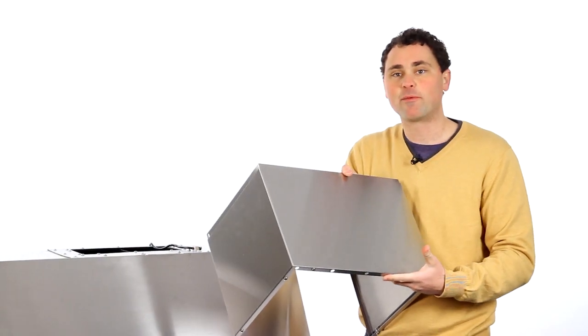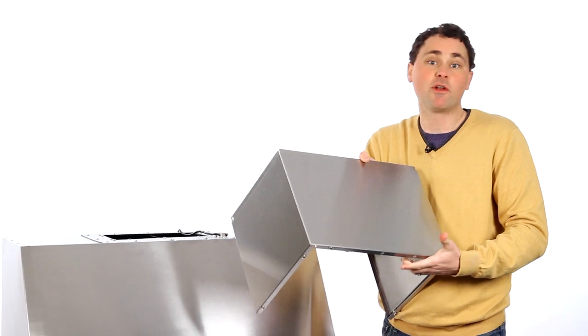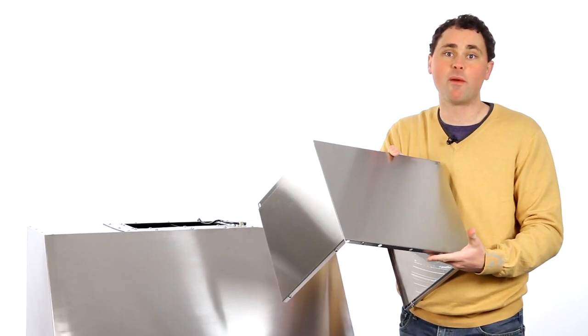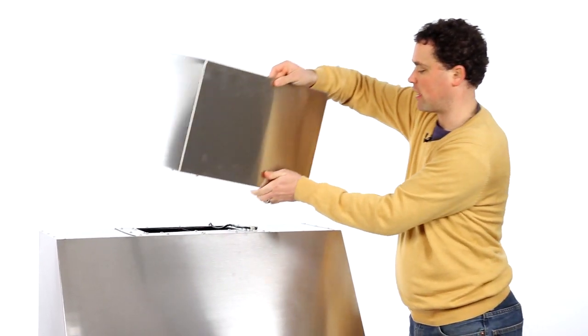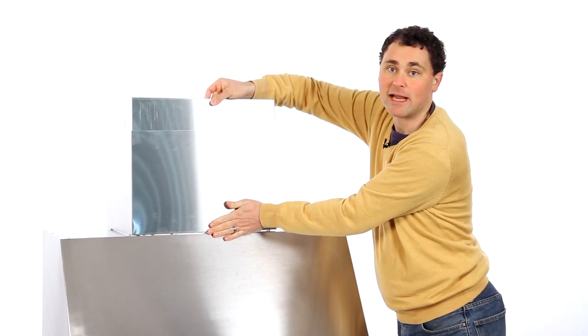The Bel Air under cabinet range hood has an optional chimney if you don't have cabinets and you want to use it as a wall mounted hood. The chimney goes on and extends to hide your ductwork.